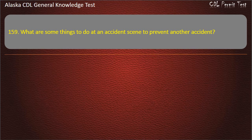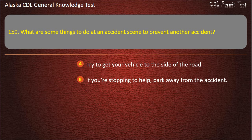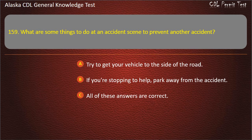Question 159. What are some things to do at an accident scene to prevent another accident? Try to get your vehicle to the side of the road; if you're stopping to help, park away from the accident; or all of these answers are correct. Answer: All of these answers are correct.